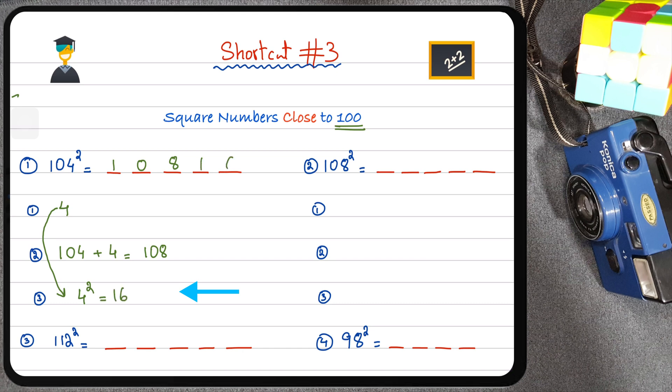Let's do another example. Here we have 108 squared. Again we're going to square this in three simple steps. First, I'm going to find out how much greater 108 is than 100, so the answer to that is 8. Next you want to add 8 to 108, so that gives us 116. Here we have the first three digits sorted out. Now to obtain the remaining two digits, we're going to go back to step 1 and simply square it. The square of 8 is 64, so here we have the last two digits, 64.